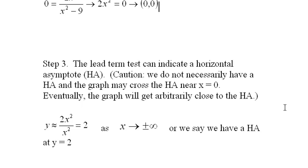Eventually, the graph will get arbitrarily close to the horizontal asymptote, if it exists. So what do we do here? We look at the highest, the lead term on the top, and the lead term on the bottom, the highest power terms.